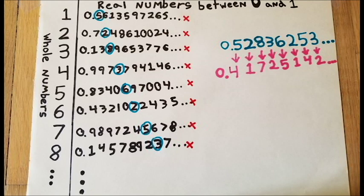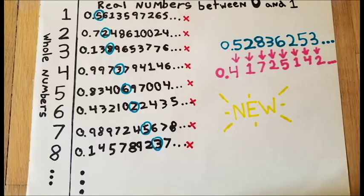This shows that there are more numbers between zero and one than there are whole numbers. This new set of decimals creates our next smallest infinity, Aleph 1. Unlike Aleph Null, it is an uncountable infinity.